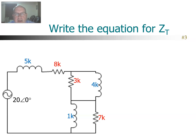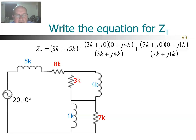The total Z of the circuit would be expressed as the 8K resistor plus the 5K inductor that are in series, so it's 8K + j5K. We add to that the first parallel branch — that's the 3K resistor in parallel with the 4K inductor: (3K + j0)(0 + j4K) divided by (3K + j4K). Then we do the same thing with the bottom parallel circuit: the 7K resistor in parallel with the 1K inductor: (7K + j0)(0 + j1K) divided by (7K + j1K). And that is the equation for the total Z.